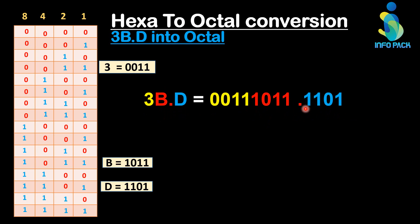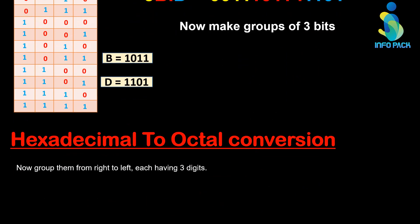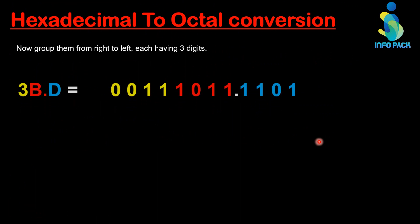Now combine all the binaries and make the groups of three bits. To make the group of three bits, now we have to follow two directions. One direction is for fractional part, one direction is for integral part. The direction for fractional part is from left to right now, and for integral part is right to left.